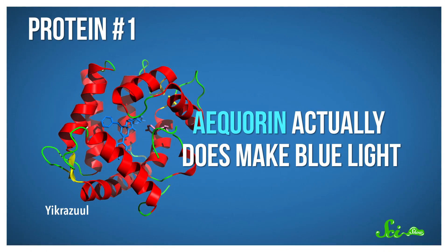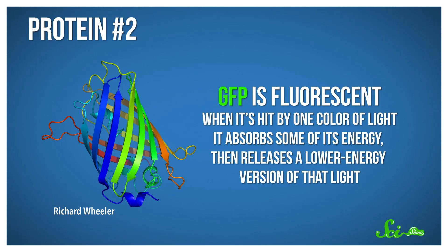The first one, equorin, actually does make blue light. The second protein, called GFP, is fluorescent, meaning that when it's hit by one color of light, in this case the blue from the equorin, it absorbs some of its energy and then releases a lower-energy version of that light, green.